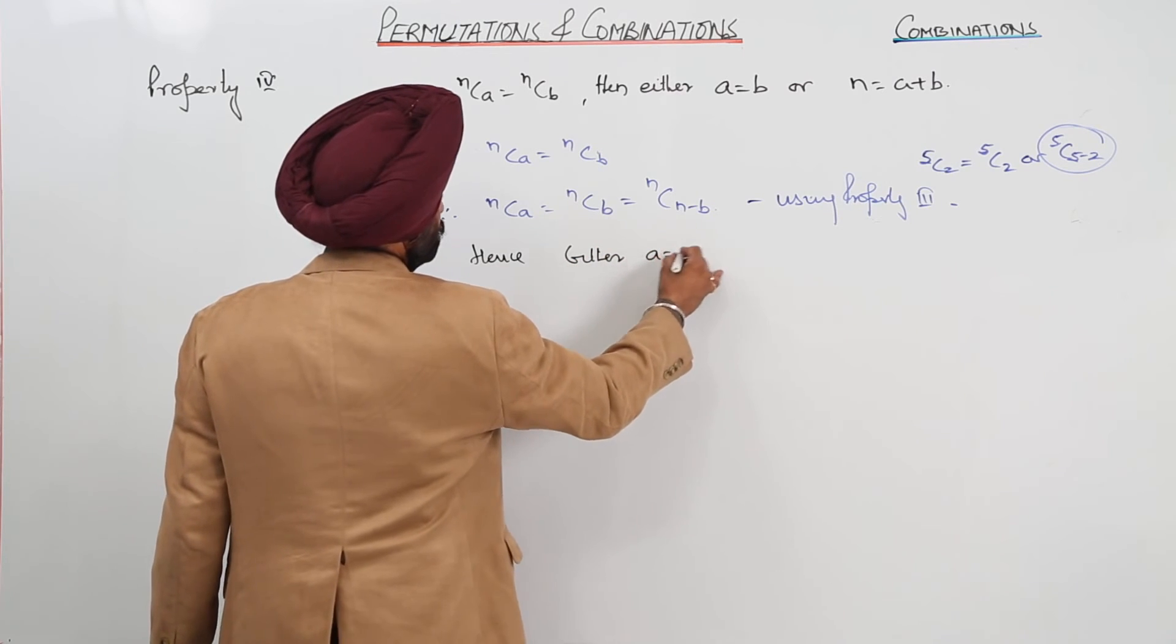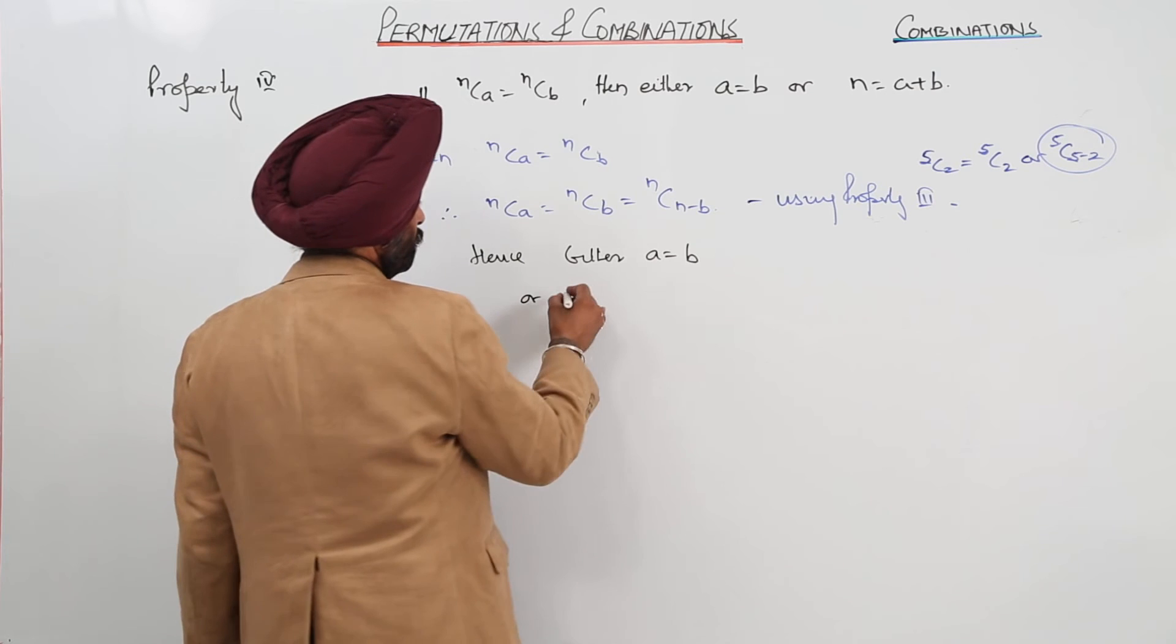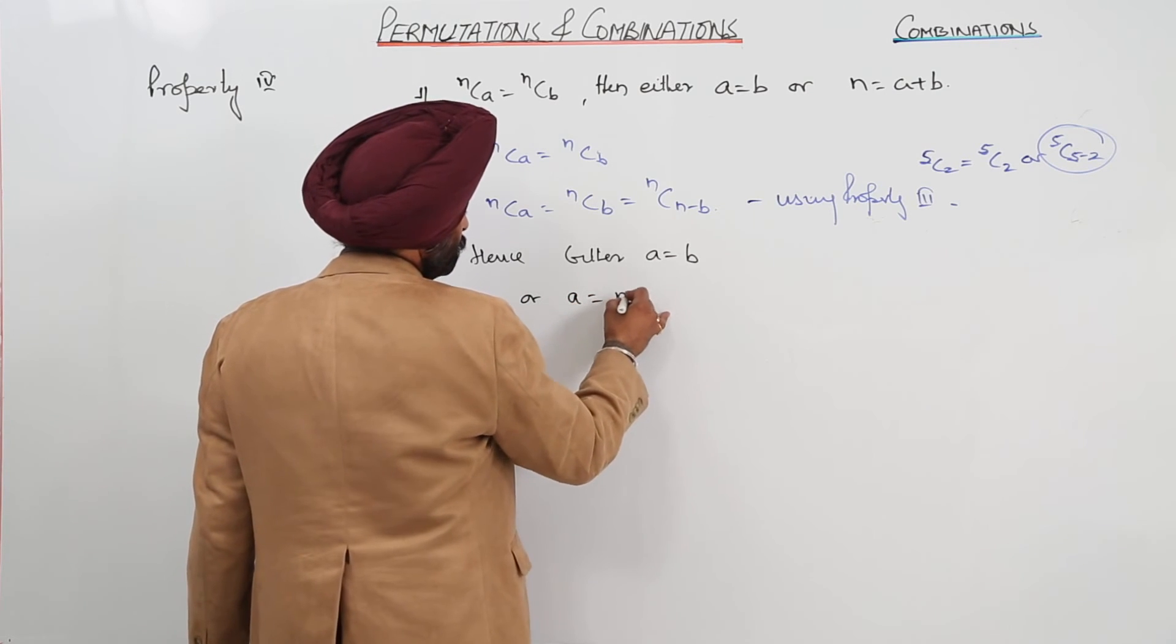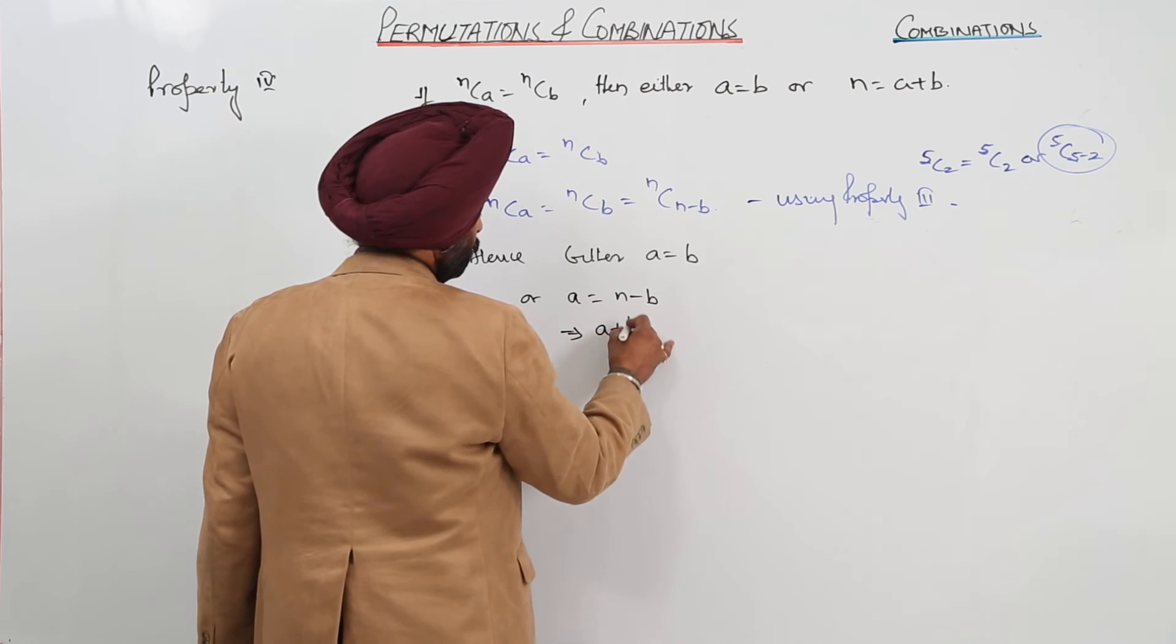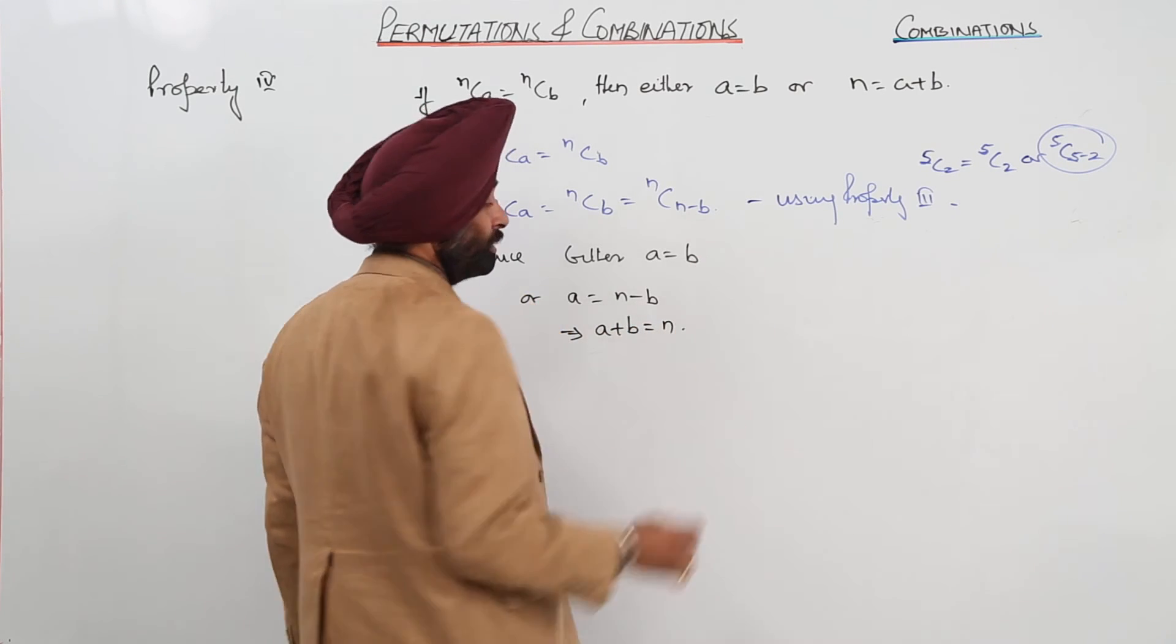Either a is equal to b, or a is equal to n minus b, which gives us a plus b is equal to n.